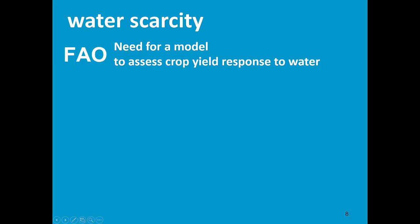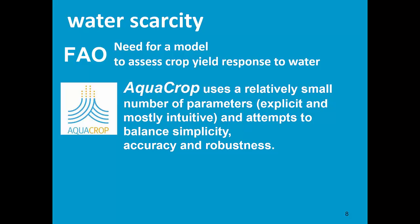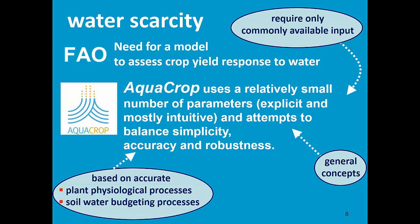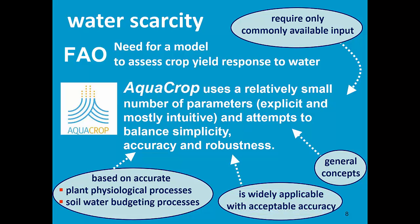In answer to water scarcity, FAO developed a model to assess crop yield response to water. There are many models, but most are for research purposes. The model FAO developed is called AquaCrop, and it uses a relatively small number of parameters which are explicit and mostly intuitive, requiring only commonly available input. When developing the model, FAO attempted to balance simplicity with accuracy and robustness. It is a simple model based on general concepts, but it describes plant physiological processes and soil water budgeting processes with great accuracy. It is robust and widely applicable with an acceptable accuracy.